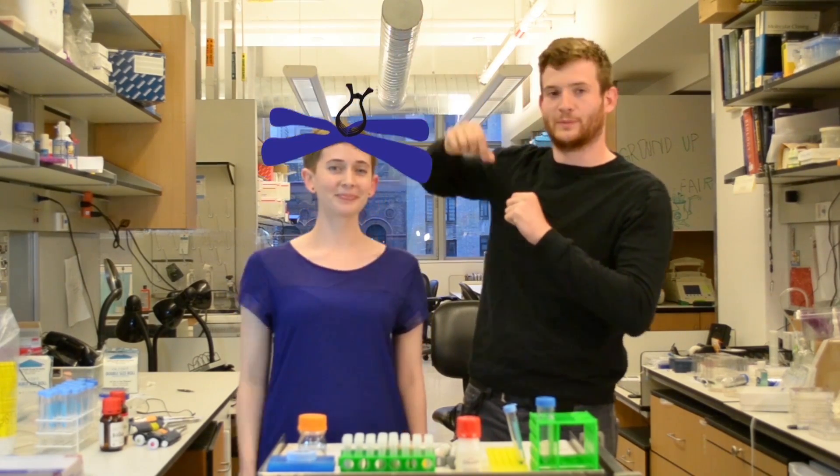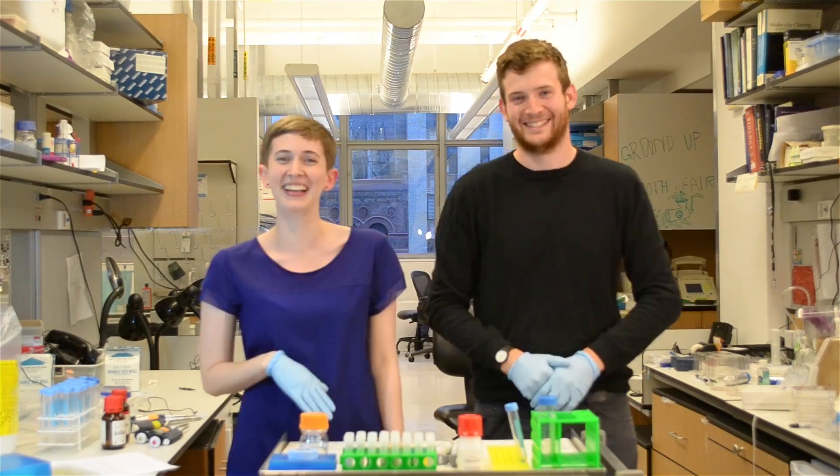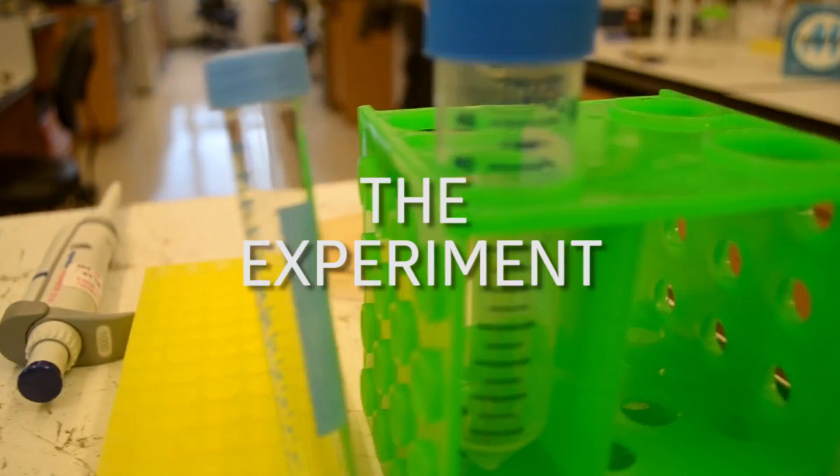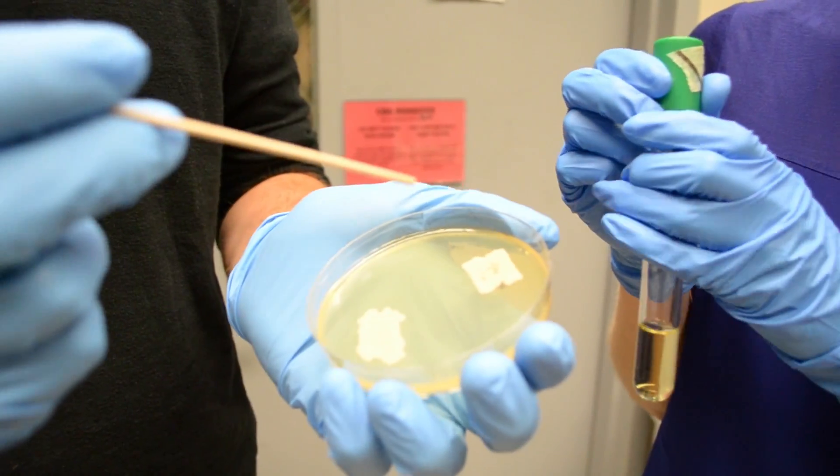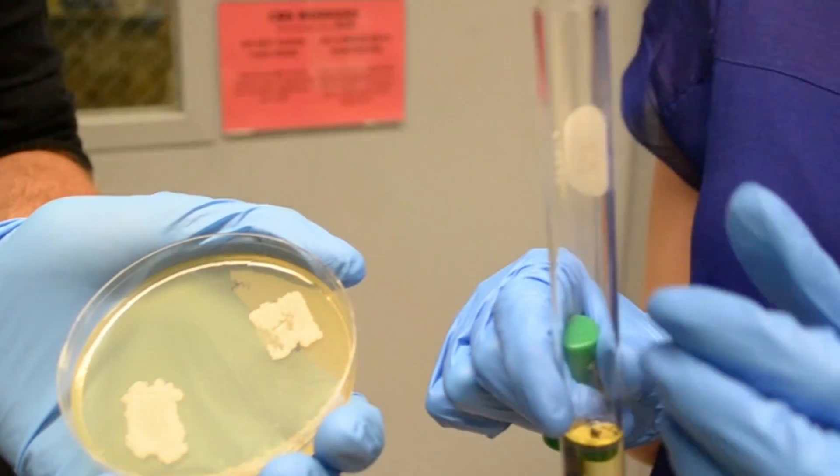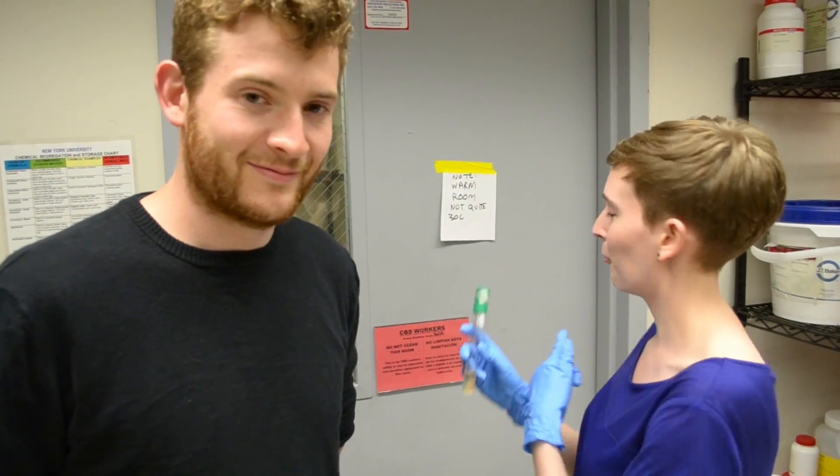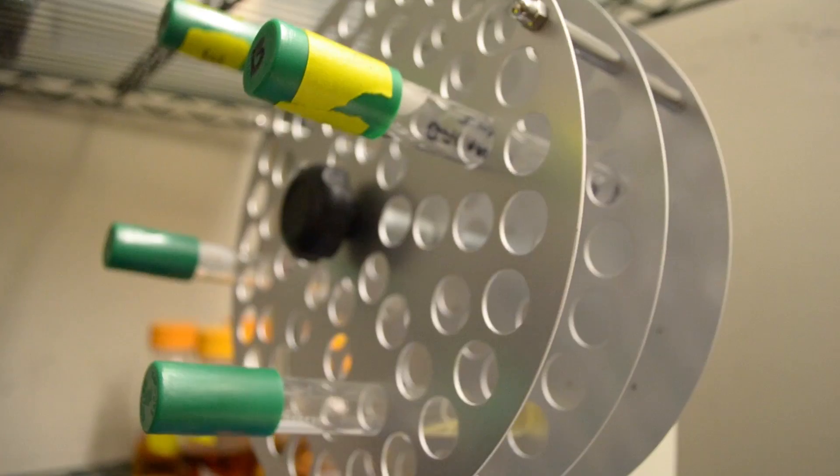We're going to start off by taking some of the yeast that's been growing on this plate. I'm going to scrape a little bit off and put it into some nice liquid food for it to grow in. Now we're going into this warm room so that the yeast can be happy and warm while it's growing.